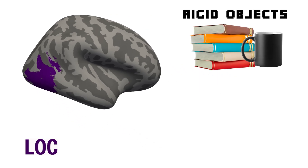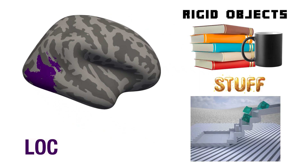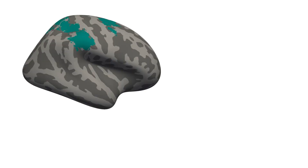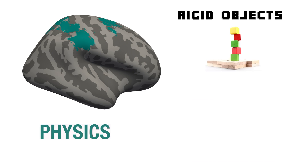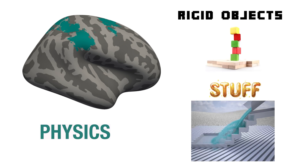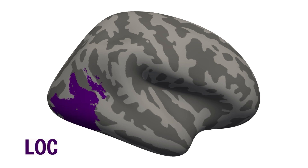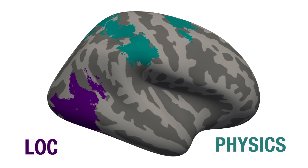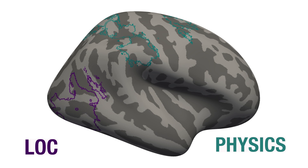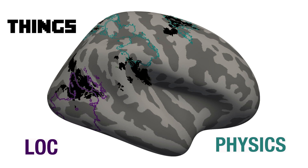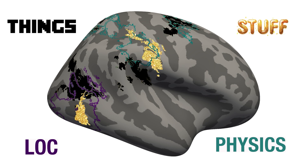First, the LOC, which is known to process the shape of rigid 3D objects, also represents deformable materials and stuff. Second, the frontoparietal network, which we know processes the physics of rigid objects, also represents the physics of stuff. And finally, and most importantly, we found that both LOC and the physics network show distinct sub-regions — one with a preference for things and another with a preference for stuff.